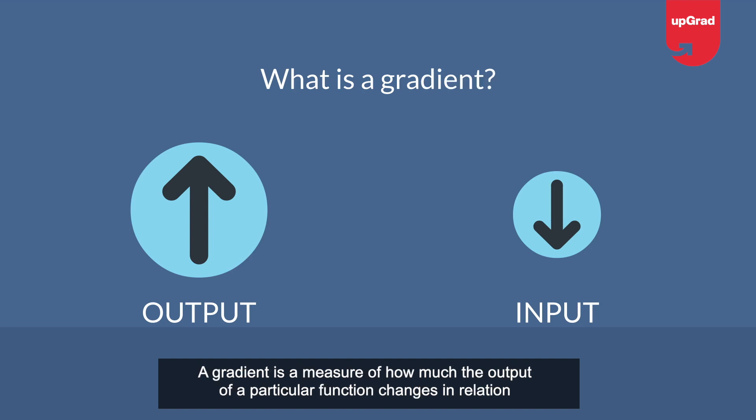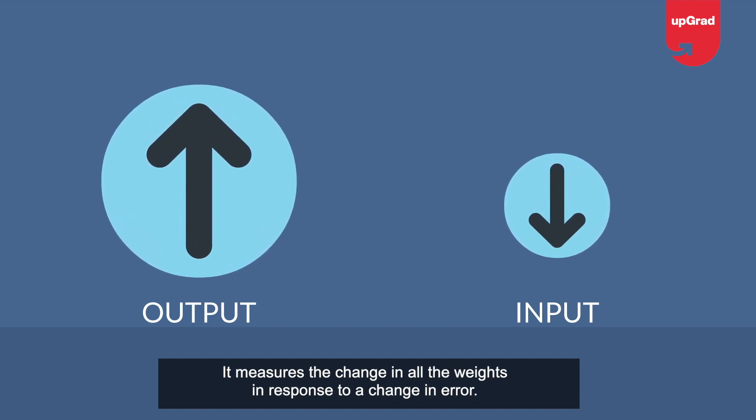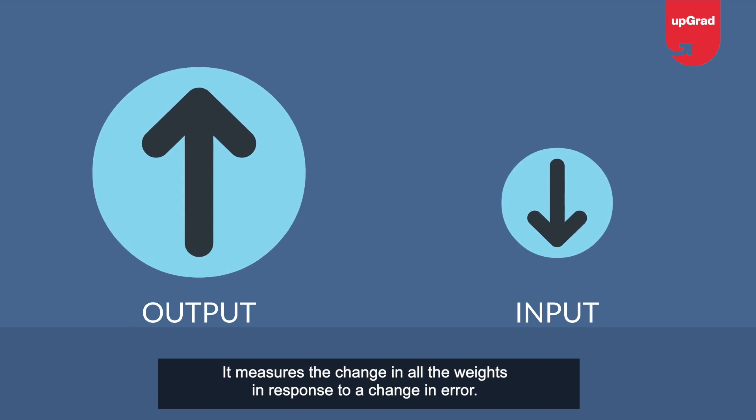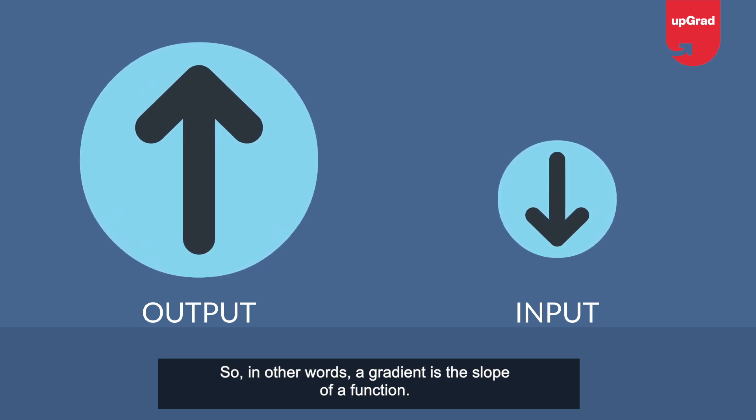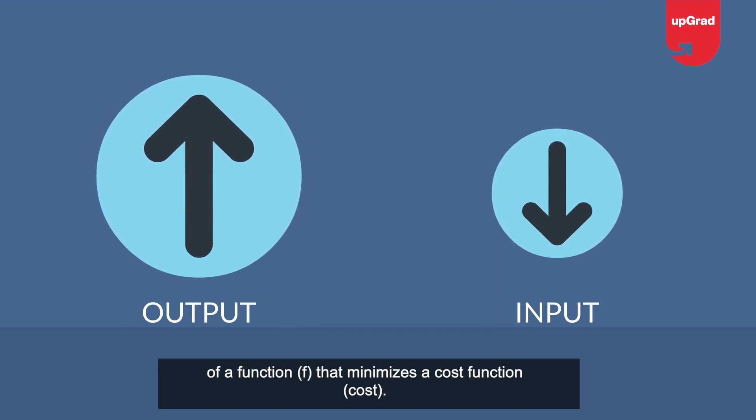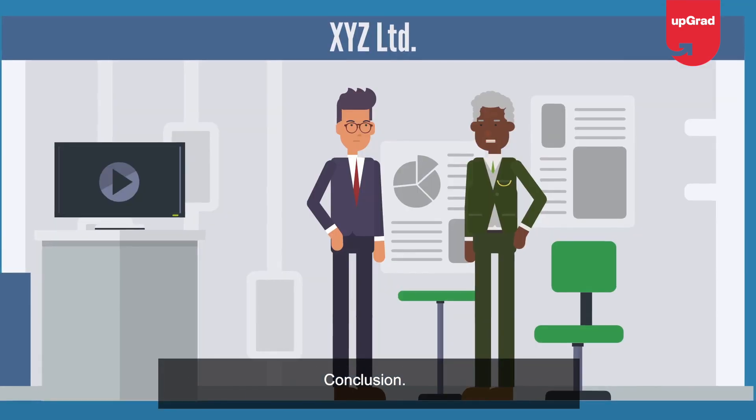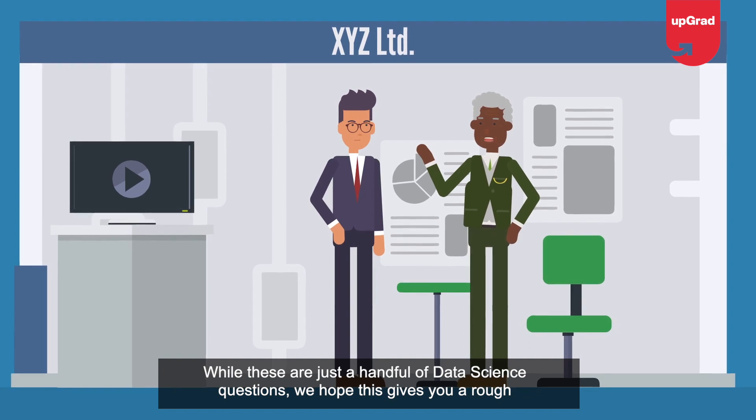Question 15: Explain gradient descent. To understand gradient descent, you must first understand what a gradient is. A gradient is a measure of how much the output of a particular function changes in relation to a minor change in the inputs. It measures the change in all weights in response to a change in error—in other words, a gradient is the slope of a function. Gradient descent is an optimization algorithm that helps find the values of parameters or coefficients of a function f that minimizes a cost function. It is best suited for instances when parameters cannot be calculated analytically.